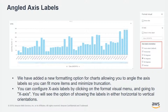Angled Axis Labels is the ability, on charts with an x-axis that you're using a dimension on, could be dates, could be countries, could be any kind of categorical information.